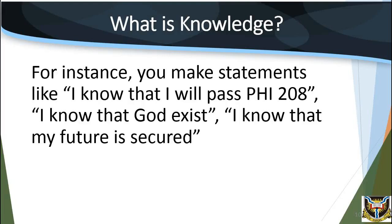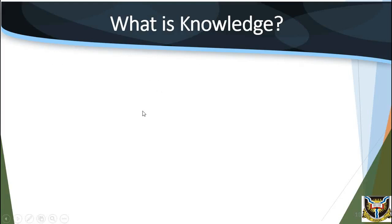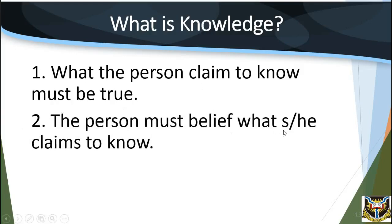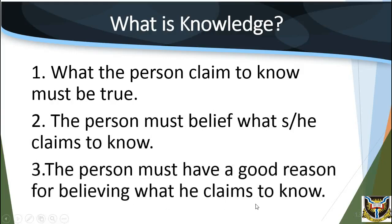The standard answer is that for a person to know something, such a person must fulfill three conditions. The first is that what the person claims to know must be true — one cannot truly claim to know what is false. The second condition is that the person must believe what she or he claims to know; it becomes a contradiction to say, for example, 'I know that the sun is hard but I don't believe it.' Lastly, the person must have a good reason for believing what he claims to know. A person can't just say 'I know that so and so' without going further to give credible reasons for making that claim.